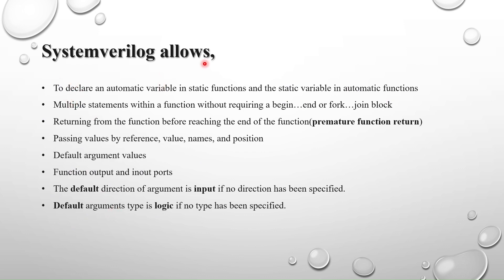SystemVerilog allows declaring an automatic variable inside a static function, and a static variable inside an automatic function. You do this using the keywords 'automatic' and 'static'. If you want a static variable inside an automatic function, use the 'static' keyword; if you want an automatic variable inside a static function, use the 'automatic' keyword.